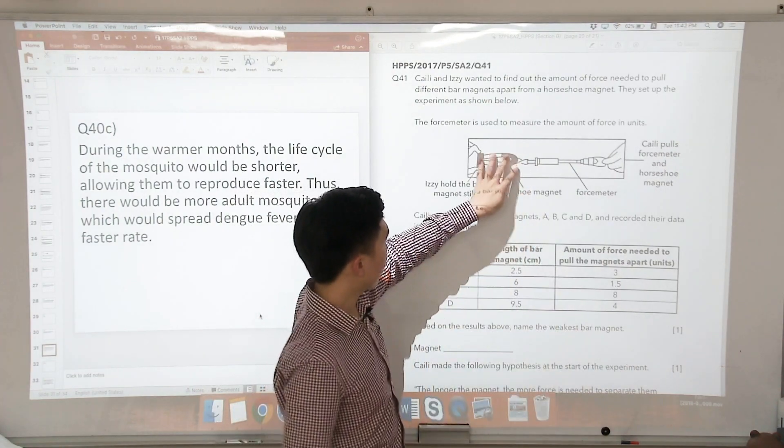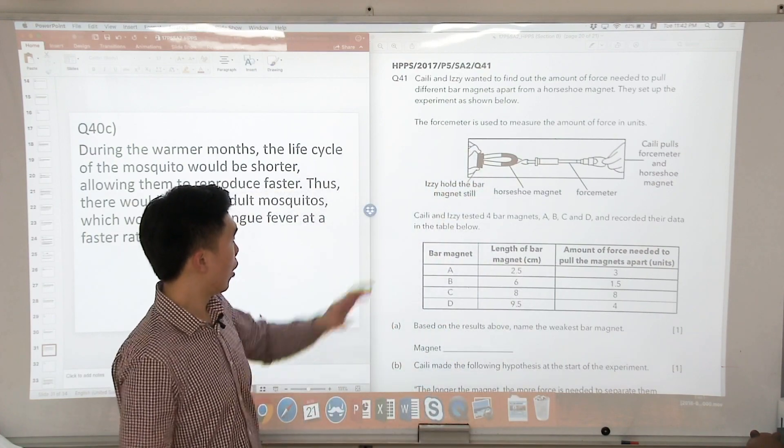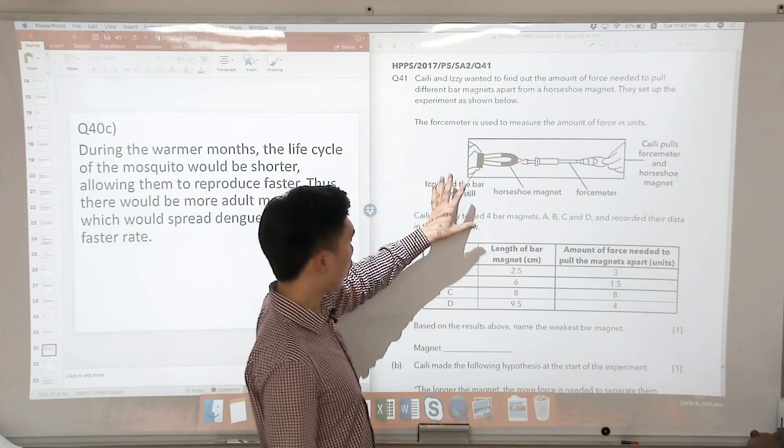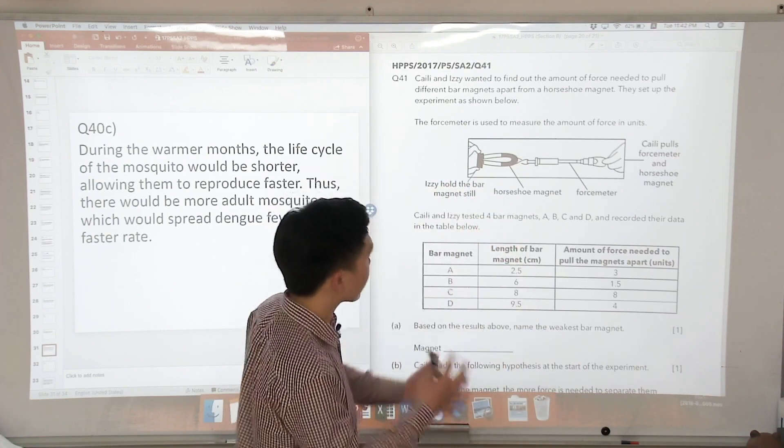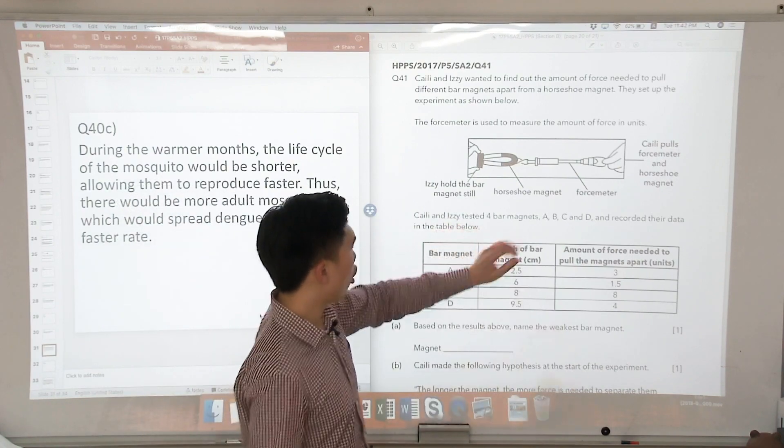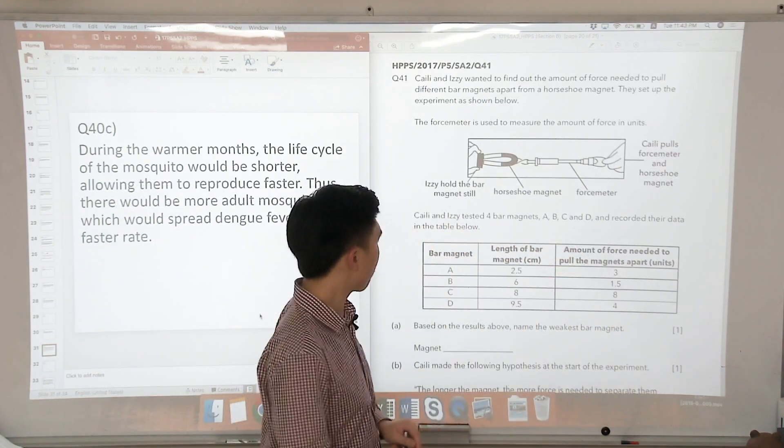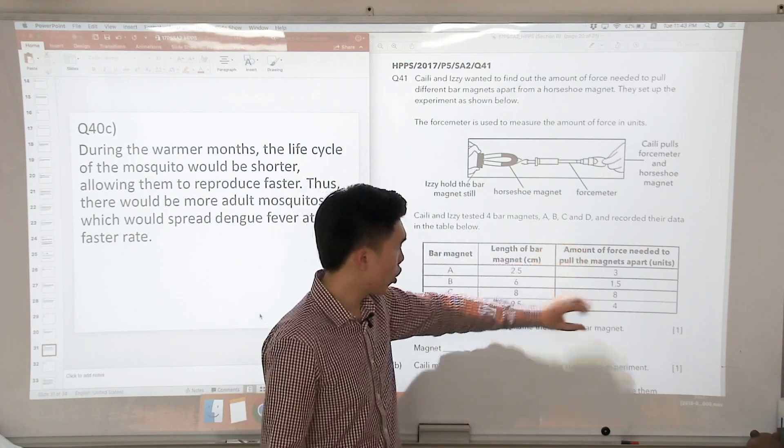So we have a horseshoe magnet here, we have a bar magnet here, they are attracting each other. We want to find out which one is the strongest, which one is the weakest and we're going to make some interpretations from there. Kylie and Easy tested four bar magnets and recorded the data. We have different bar magnets, different lengths of the bar magnets and different forces.